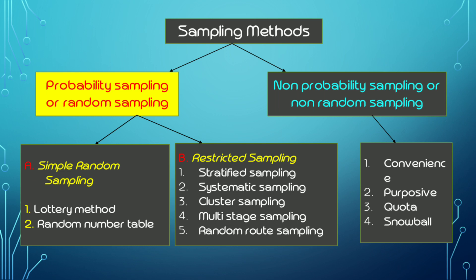For probability sampling, it includes simple random sampling or restricted sampling. For non-probability sampling, it includes convenience, purposive, quota, and snowball sampling.